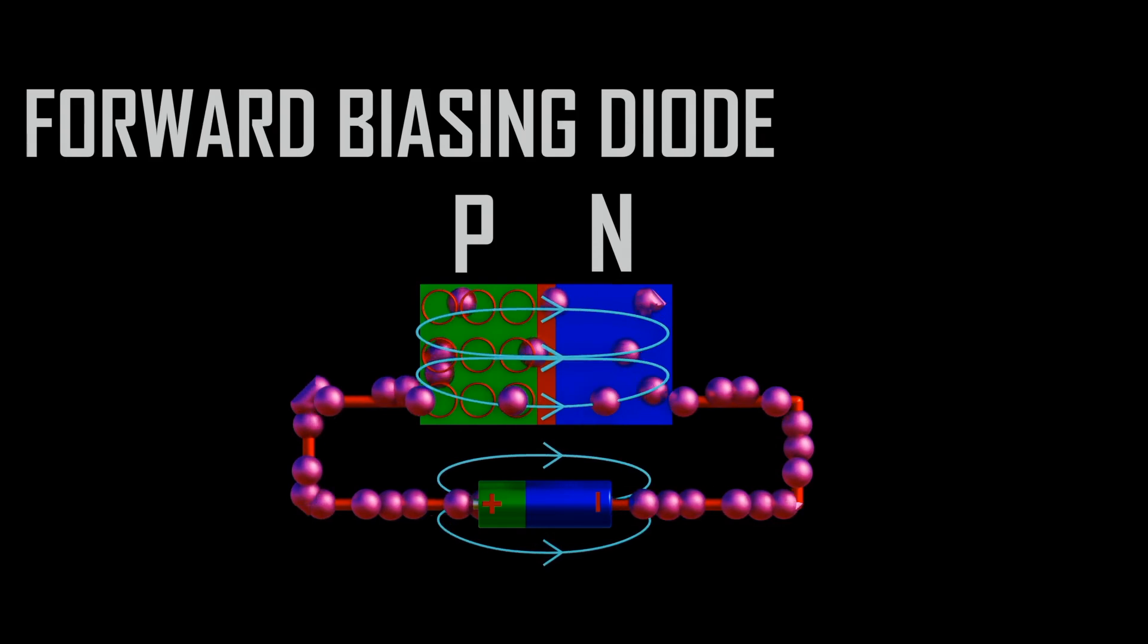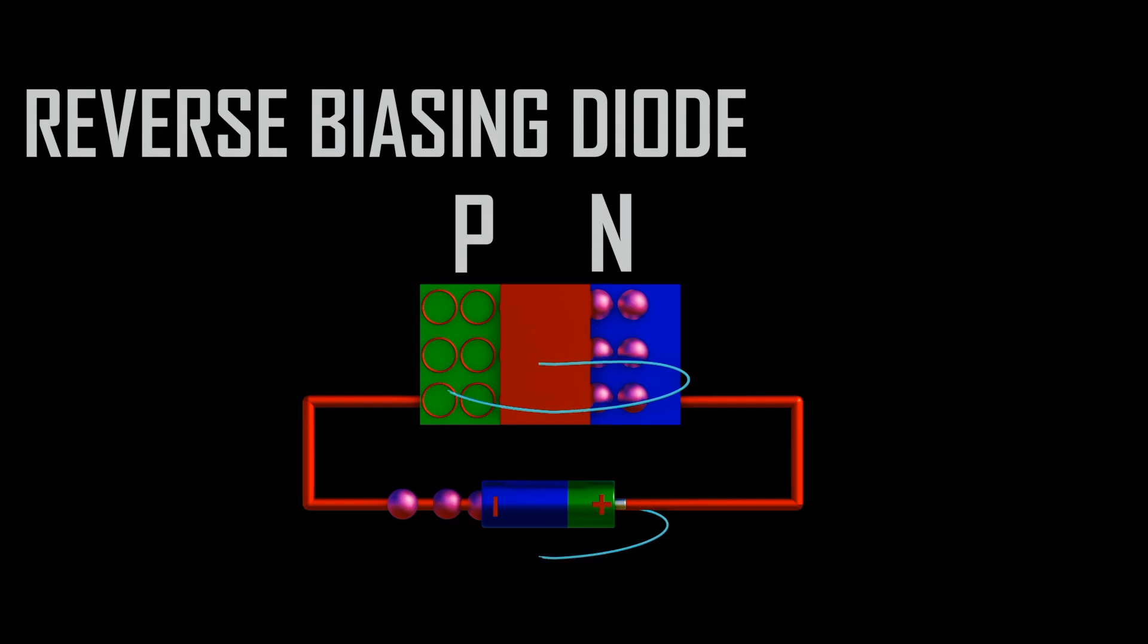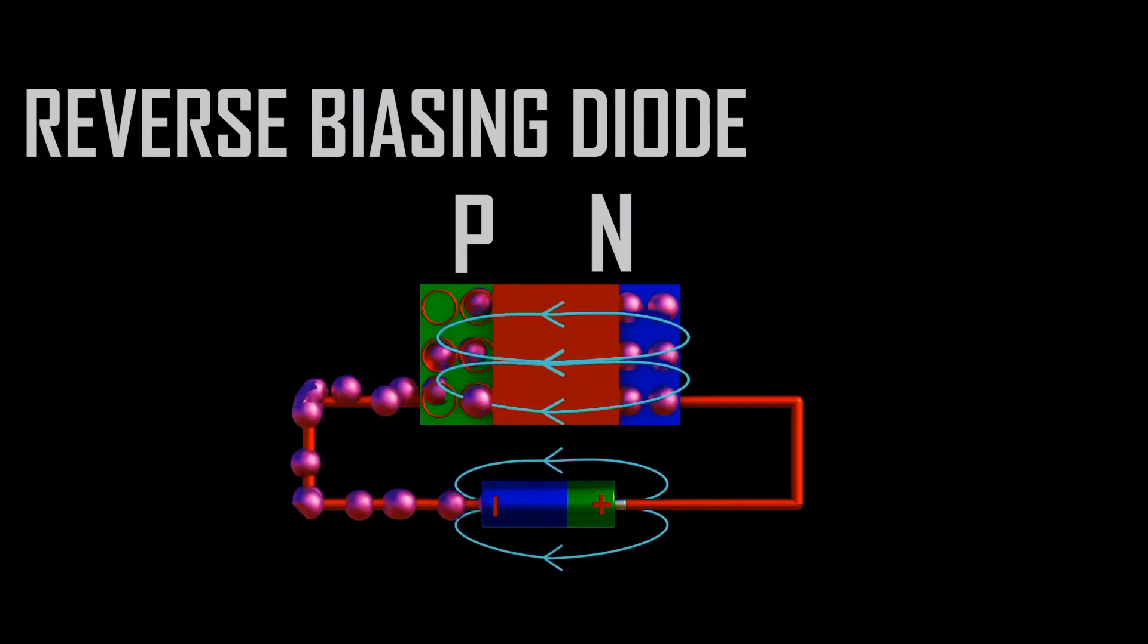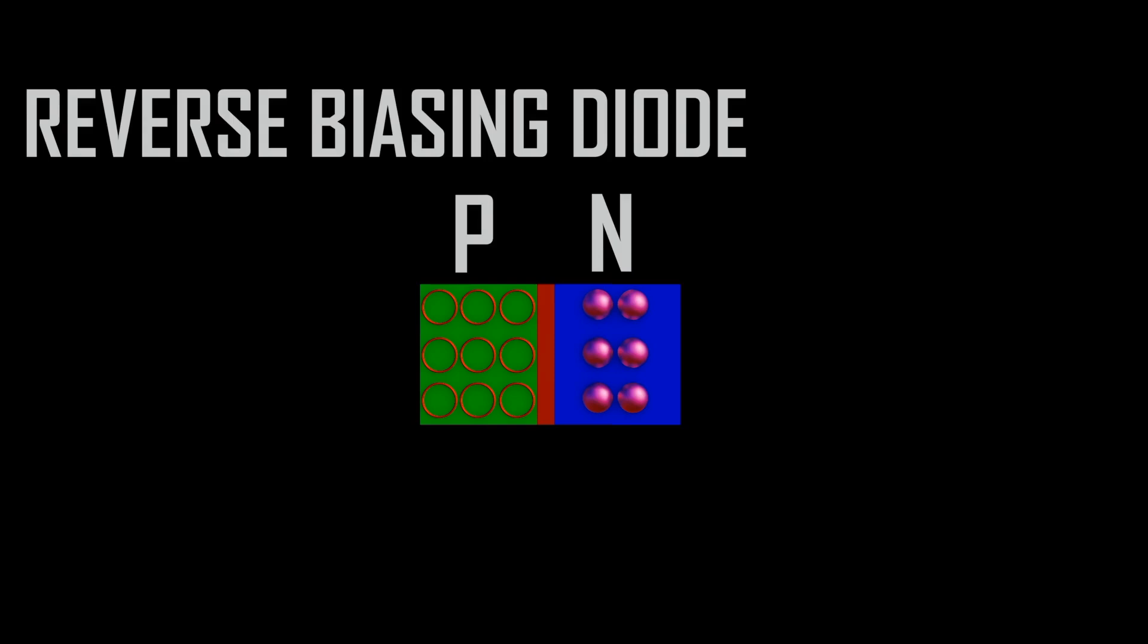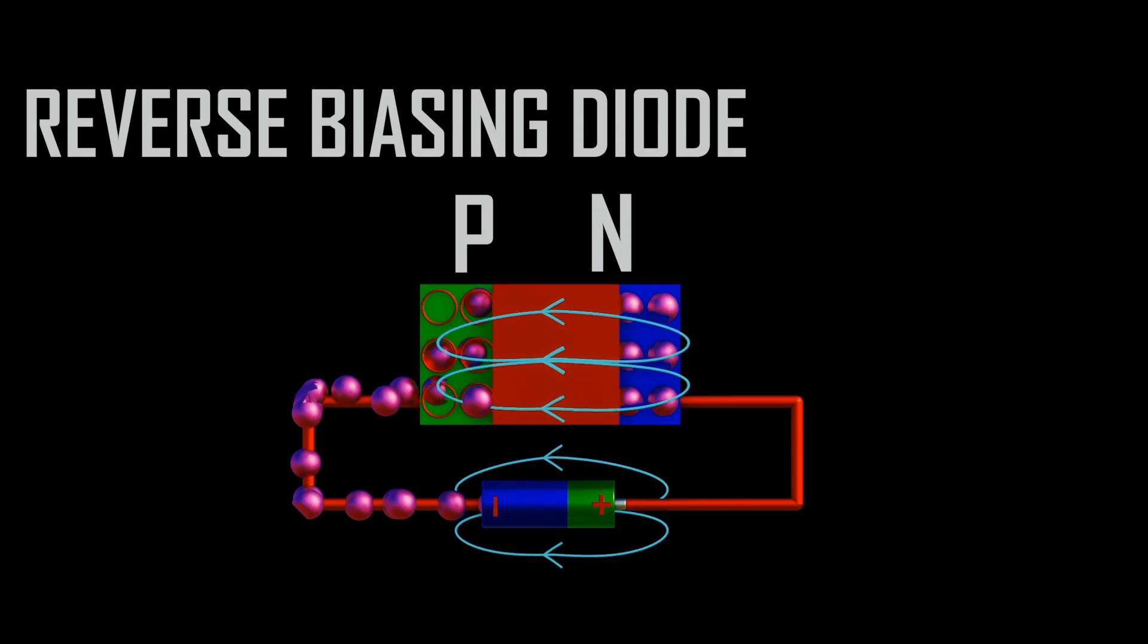Depending on the size of the depletion region, the amount of current required for the electron to jump across the junction when forward biased is called forward current. When the electrons jump towards holes, they emit photons. The emission of these photons depends on the size of the band gap or depletion region.